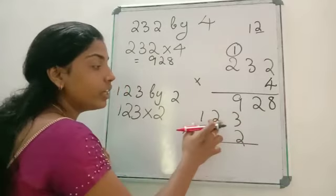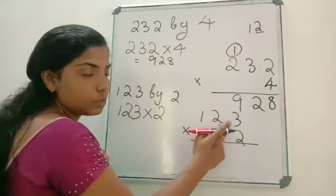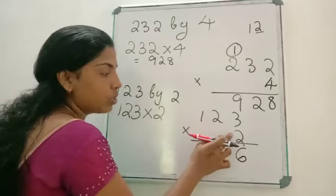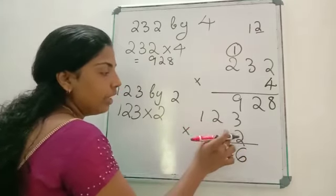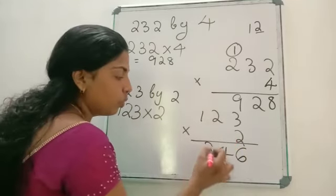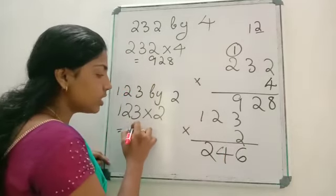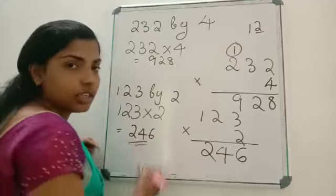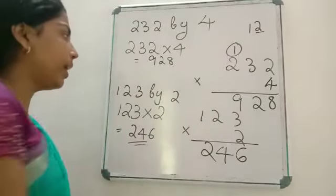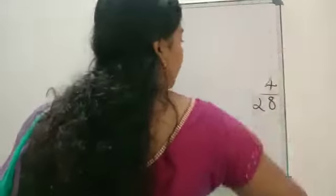Now we are going to multiply each digit with this 2. First we multiply 2 with the digit in the 1's place: 2 into 3 is 6. Again, the number in the 10's place: 2 into 2 is 4. Now 2 into the number in the 100's place: 2 into 1 is 2. So the answer is 123 into 2 is 246. So now we know how to multiply a 3-digit number by a 1-digit number.